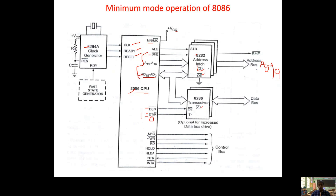Other signals present in minimum mode include M/IO bar — whether we are selecting memory or I/O is decided by M/IO bar. Similarly, WR bar and RD bar are present. HOLD and HLDA: an external peripheral uses HOLD to request access to the processor system bus. When the processor is ready it sends the HOLD acknowledgement (HLDA) signal, and 8086 gives permission to the external peripheral to use the system bus. INTR and INTA bar are used for interrupt requests — if an external device wants the processor to execute its instructions, it sends an interrupt request, and the processor responds with an interrupt acknowledgement.